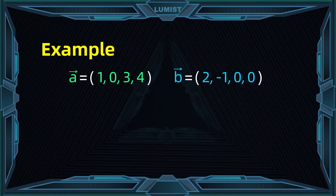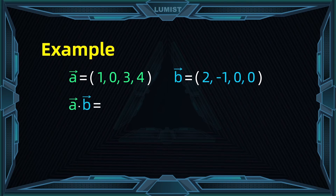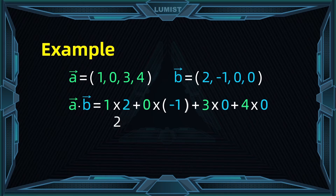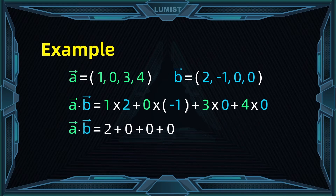For a quick calculation example, if we have vector a as [1, 0, 3, 4] and vector b as [2, -1, 0, 0], and we want to compute their dot product, we take the first entry of the two vectors — 1 and 2 — and multiply them together, then 0 times -1, then 3 times 0, and then 4 times 0, and add these four terms together. That becomes 2 + 0 + 0 + 0, so the dot product of a and b is equal to 2.